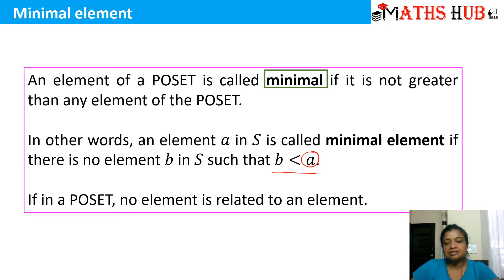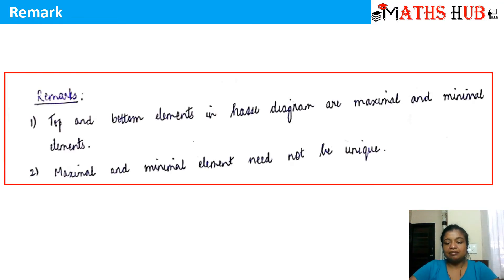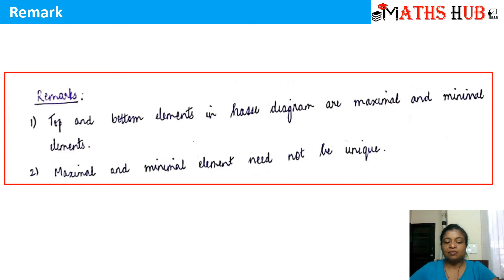In other words, the maximal element is the greatest element in the poset and the minimal element is the lowest element in the poset. Now, an important remark will help you locate the maximal and minimal elements in a Hasse diagram. The first remark: the top and bottom elements in the Hasse diagram are always the maximal and minimal elements respectively. The second remark: maximal and minimal elements need not be unique — there can be more than one maximal and minimal element.